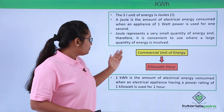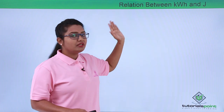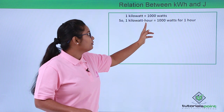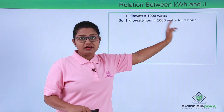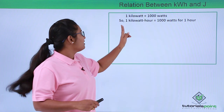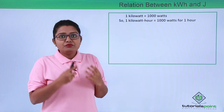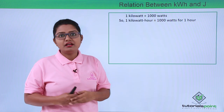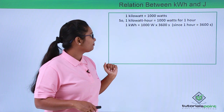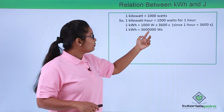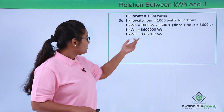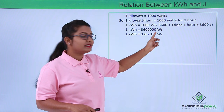Now let us look at the conversion — the relationship between kilowatt hour and joules. We know that 1 kilowatt equals 1000 watts, so 1 kilowatt hour equals 1000 watts used for 1 hour. Since 1 hour equals 3600 seconds, we get 1 kilowatt hour equals 1000 watts multiplied by 3600 seconds, which gives us 3,600,000 watt-seconds, or 3.6 × 10⁶ watt-seconds.